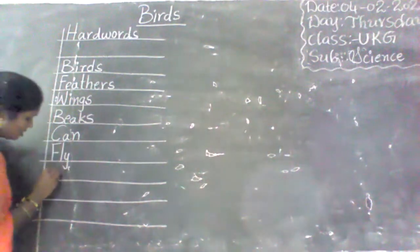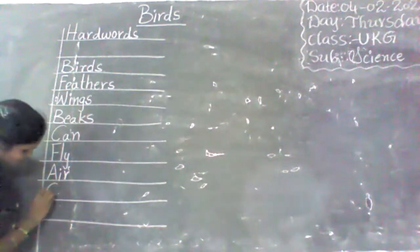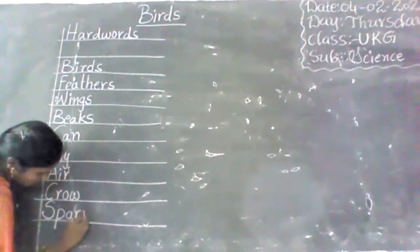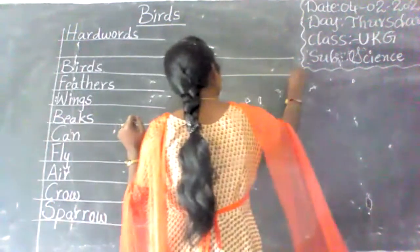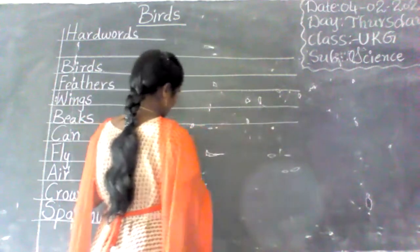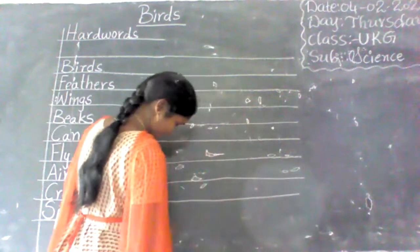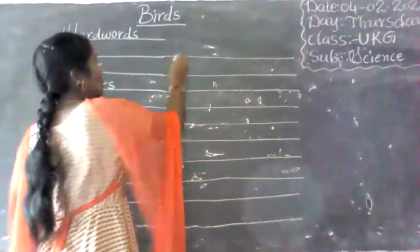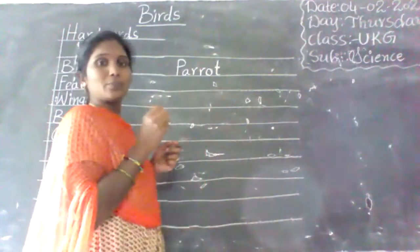Beaks — B-E-A-K-S. Can — C-A-N. Fly — F-L-Y. Birds can fly in the air — A-I-R. Crow — C-R-O-W. Sparrow — S-P-A-R-R-O-W. Parrot — P-A-R-R-O-T.